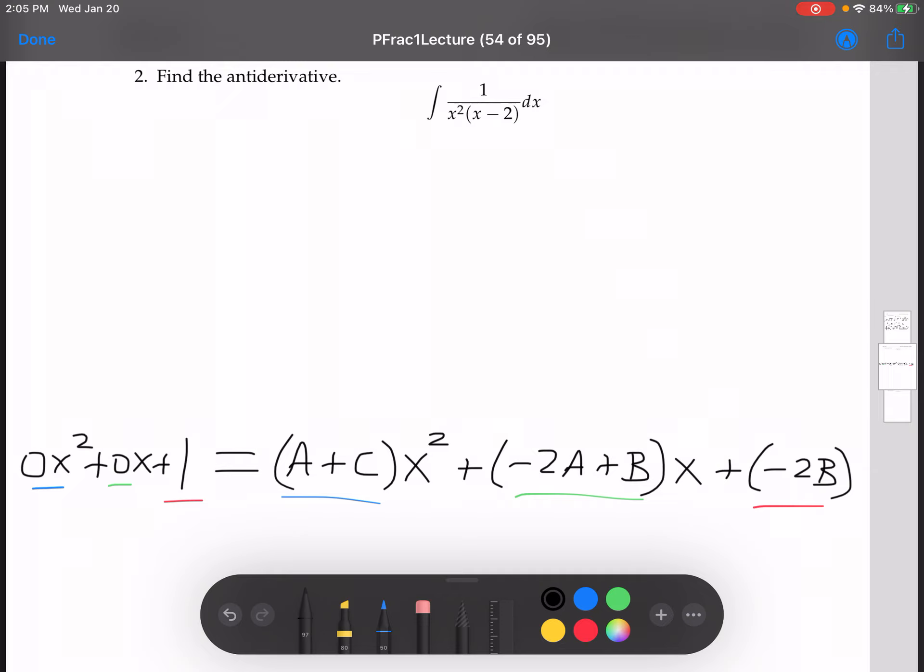All right, so let's write that down up here. We've got A plus C equals 0, negative 2A plus B equals 0, and negative 2B equals 1. All right, so let's see. One of these we can find right away, right?